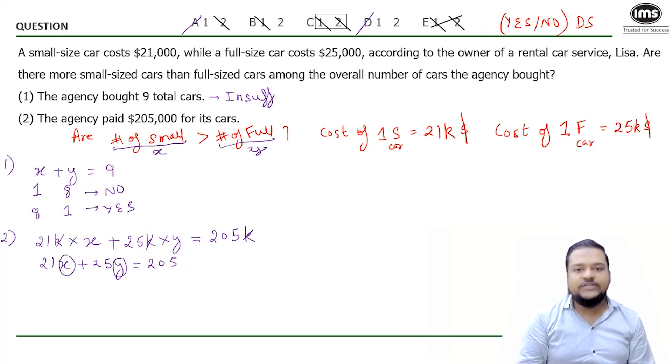So what can I conclude here is because the agency is buying some small size cars, some full size cars, and there might be a possibility that they are buying only one of them, maybe only small size cars, maybe only full size cars. They have not mentioned anywhere that they are buying at least one of them.